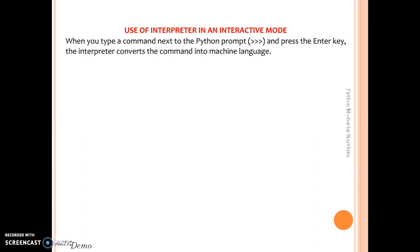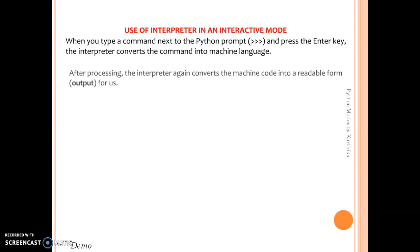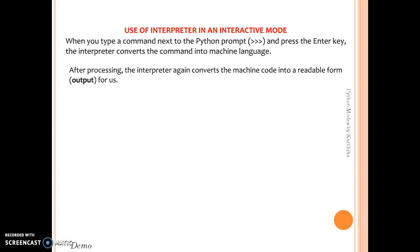Once you finish typing in the interactive mode after the Python prompt, press the Enter key to execute that particular single line. Once you press Enter, the interpreter starts converting the source code into machine language. Once your program is read by the interpreter, it converts the Python source code into machine language, the system starts processing your input, and then gives you the output in zeros and ones.